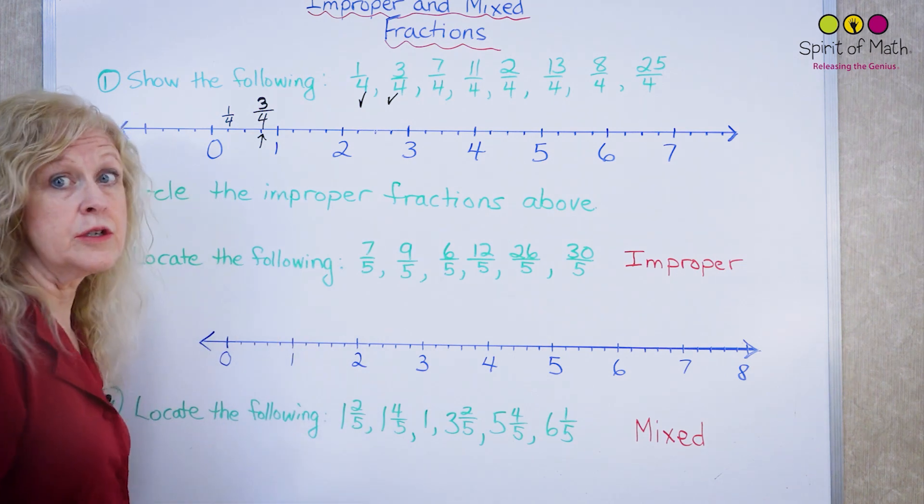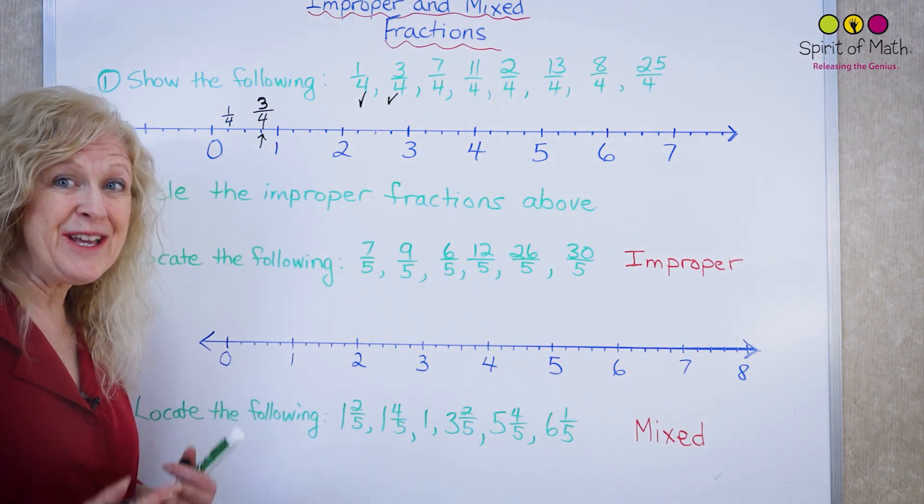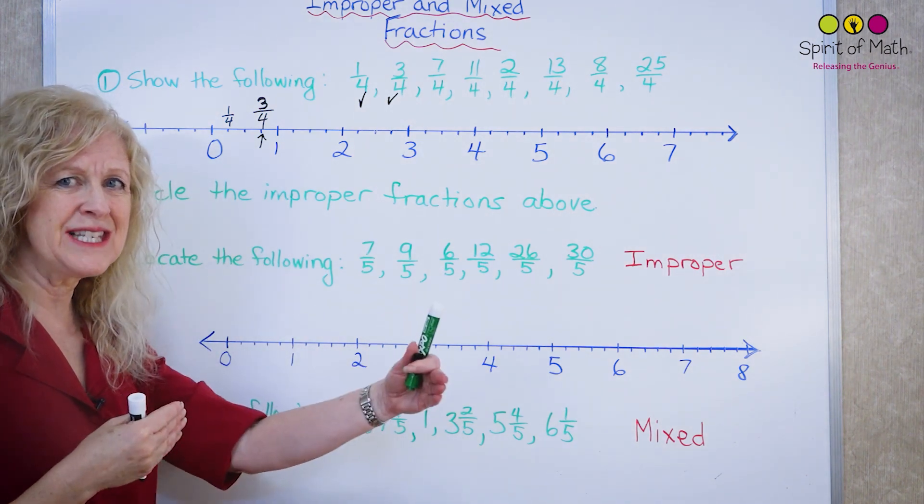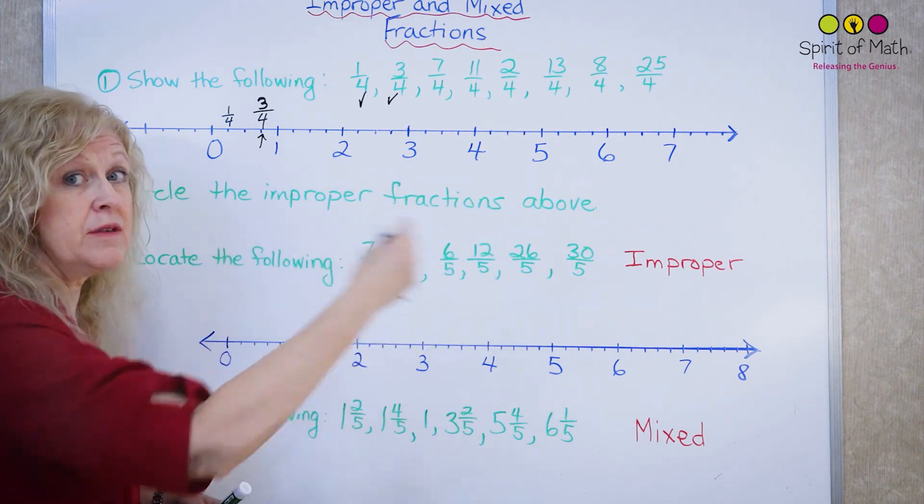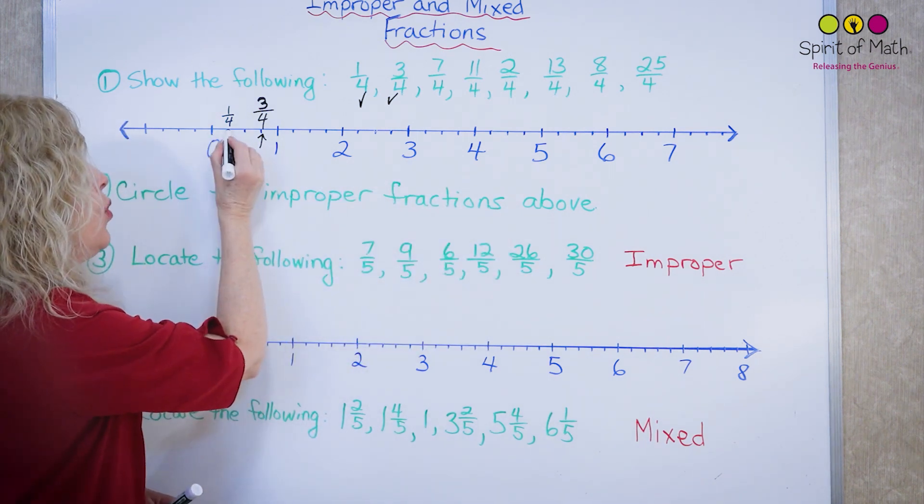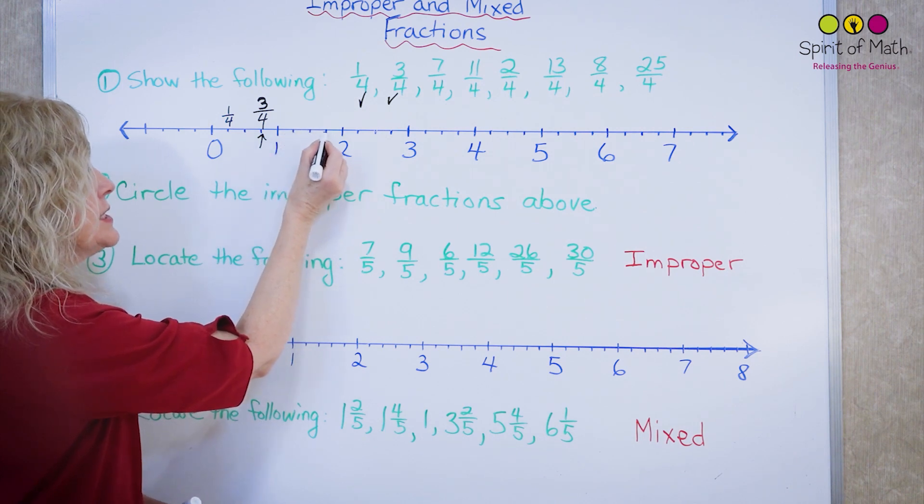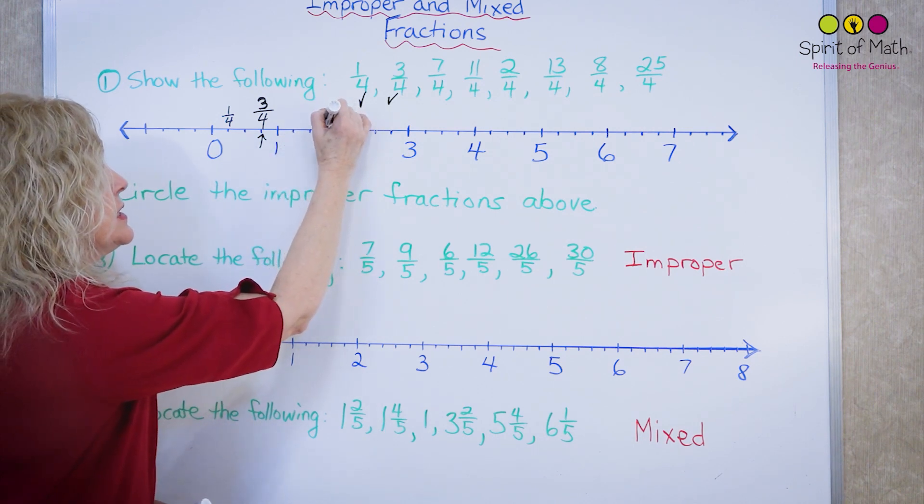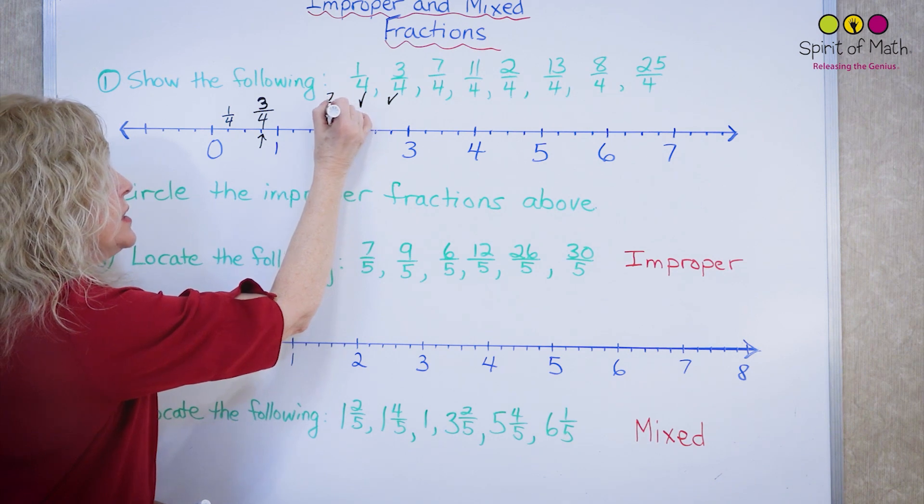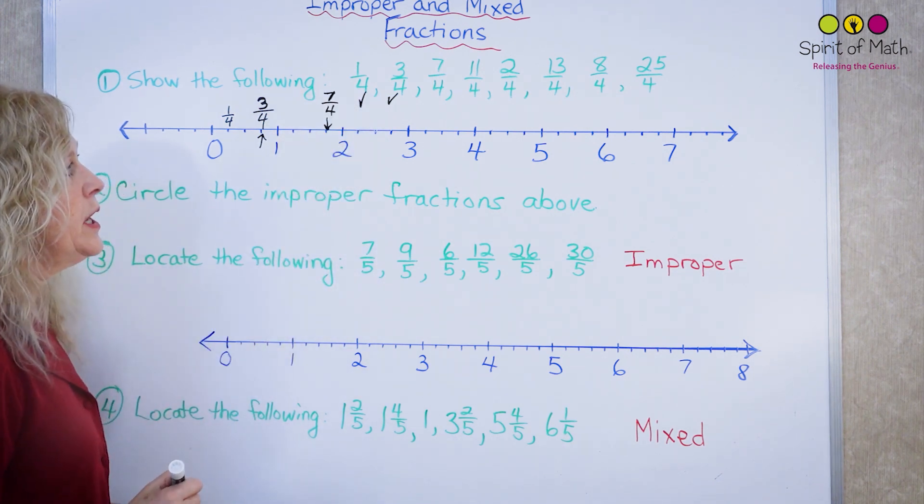Now the next one is seven quarters. Let's start at zero again because it's a distance from zero to seven quarters away in the positive direction. So one, two, three, four, five, six, seven. This is seven quarters right here.